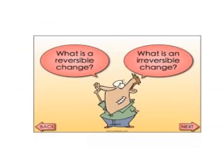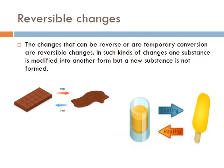Reversible changes are changes that can be reversed or are temporary conversions. In such kinds of changes, one substance is modified into another form but a new substance is not formed. Or we can say a change in which the initial substance can be obtained back by reversing the action. As we can see in these pictures, on heating a substance gets melted, and on cooling we get back the original substance.